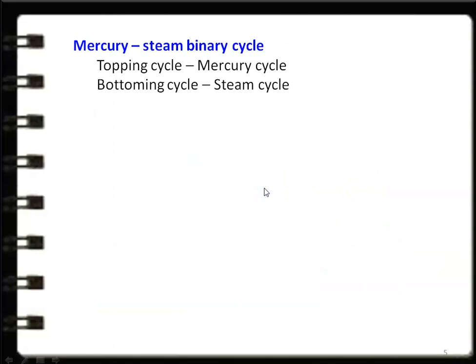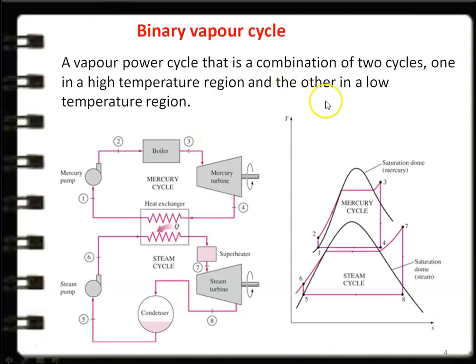In the mercury-steam binary cycle, the mercury cycle is called the topping cycle — the cycle operating at the top of the total system. The steam cycle is the bottoming cycle, operating at the lower temperature. The binary vapor power cycle is used when higher efficiency of the vapor power cycle is desired. When answering exam questions on binary vapor cycle, define it carefully, draw the layout and temperature-entropy diagram, and explain each component and process, consolidating the mercury cycle and steam cycle.